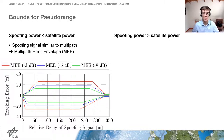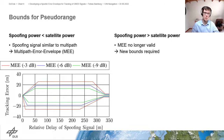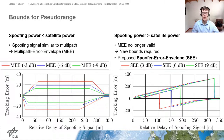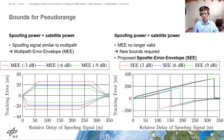If we consider the case that the spoofing signal power is larger than the satellite power, the multipath error envelope is no longer valid, so we need new bounds. That is exactly what we have done in this paper — we propose a new bound for this case, which we call the spoofer error envelope. It is similar to the multipath error envelope in that it gives the upper and lower bound of the tracking error as a function of the relative delay of the spoofing signal and other parameters.